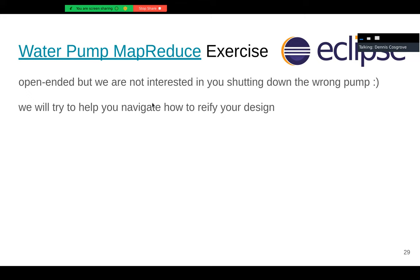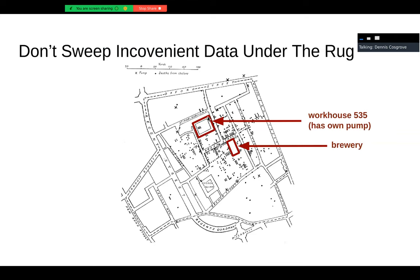We have anticipated a couple of different approaches — if you have another, let us know and we'll work with you to reify that design. One useful lesson from this story: don't sweep inconvenient data under the rug. Snow's beautiful work involved actually going out, doing the legwork, and figuring out — for example — that none of the guys in the brewery got sick because they drank beer all day. Take the data and come up with a pure, clean algorithm.